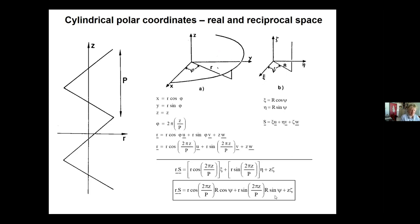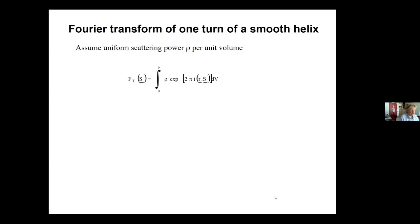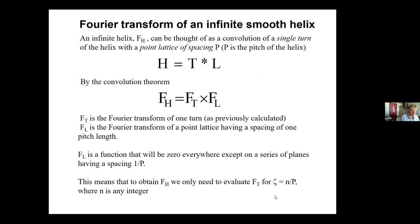You work it all out starting from R·S in cylindrical coordinates for one turn of the helix. P is the pitch of the helix. We're thinking of an idealized single helix - a wire with no atoms. We want the Fourier transform of that wire. You can think of an infinite helix as a convolution of a single turn with a point lattice having spacing P. If you remember the convolution theorem, you can relate the Fourier transforms of each component as a product. What that tells you is the Fourier transform of a single turn gives a set of planes having spacing 1/P.